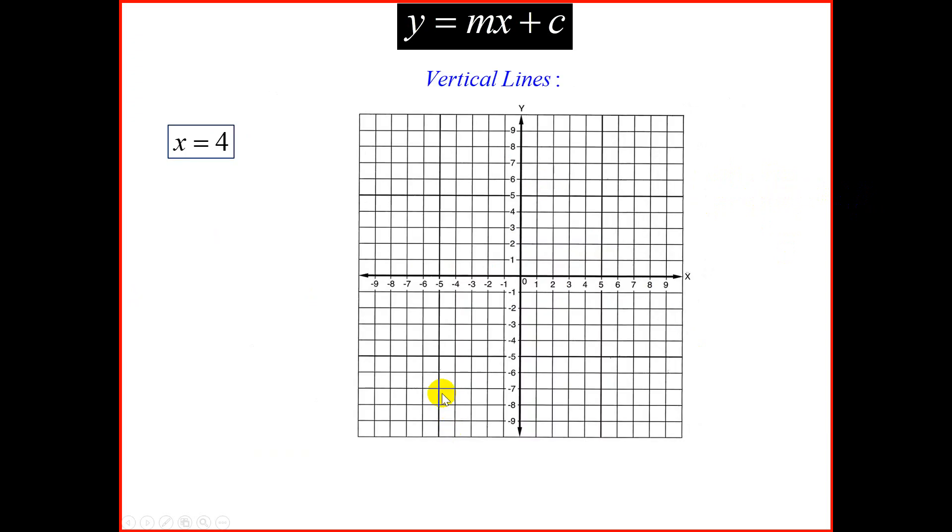Let's look at vertical lines. If x is equal to 4, these are special lines. So we go to the x-axis. And at 4, we draw a vertical line. Another one, if x is equal to negative 3, we go to the x-axis at negative 3. We place our dot, and we draw a vertical line. So these are vertical lines.